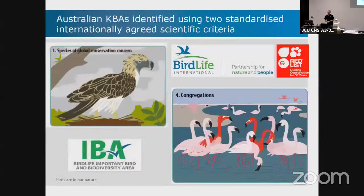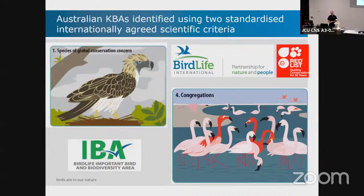In Australia, we did the important bird areas based on threatened species and big aggregations. That's where the link to the Ramsar stuff comes in — where you've got more than 40,000 waterbirds. Even if you can't identify them individually, you're still getting a site that could meet those criteria.